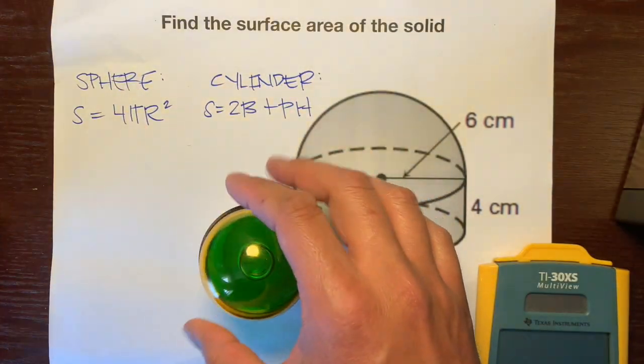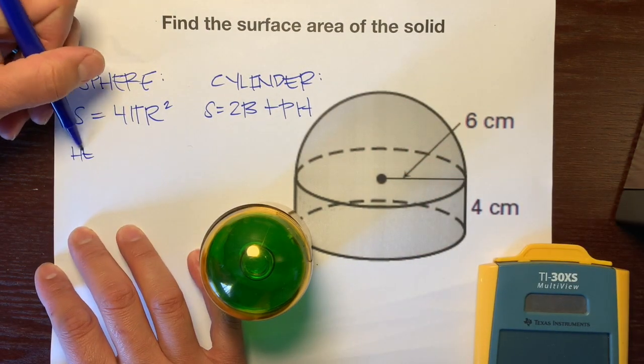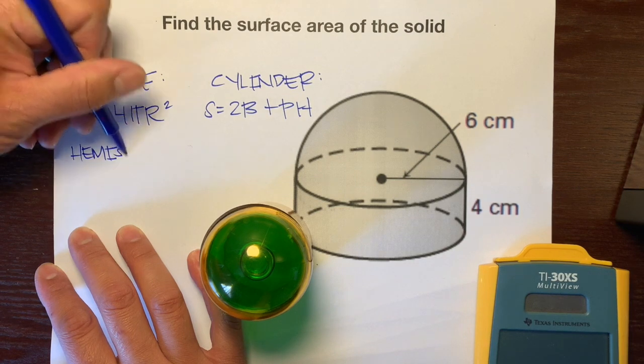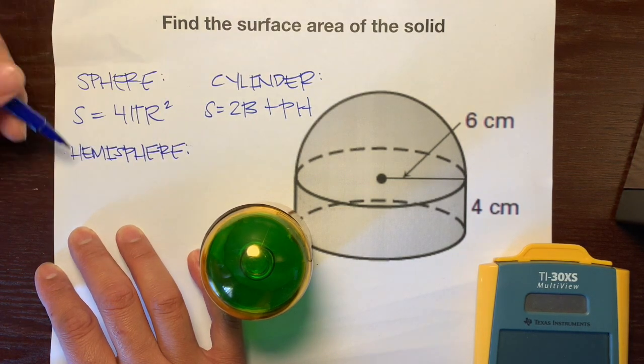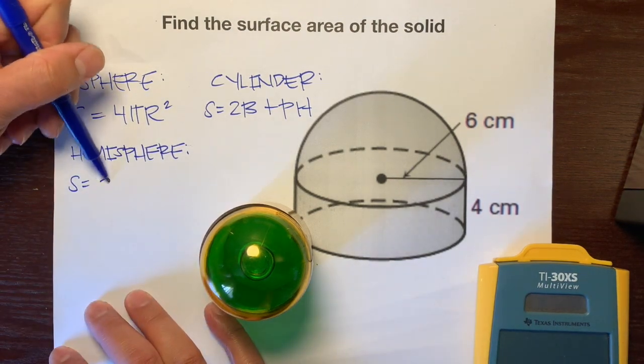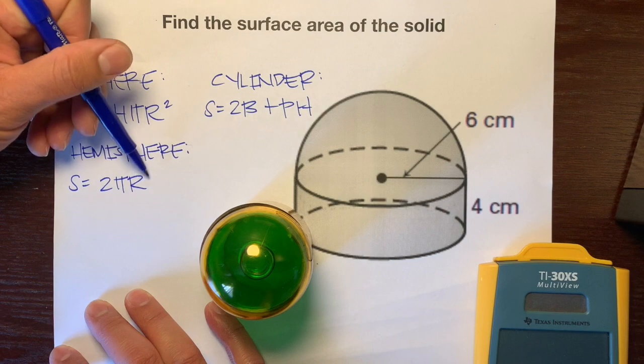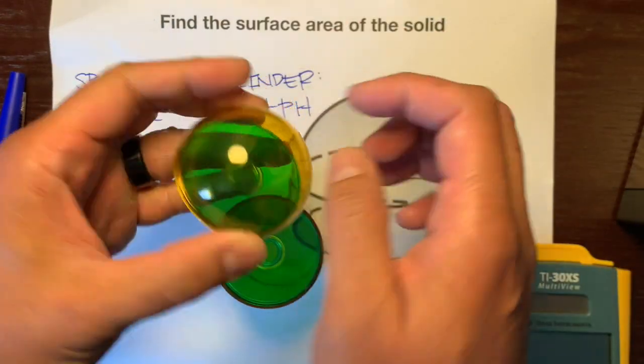If we cut that full sphere in half for a hemisphere, we're going to not use 4πr², but we're going to use half, which is 2πr². So we only need two circles to cover up this hemisphere.